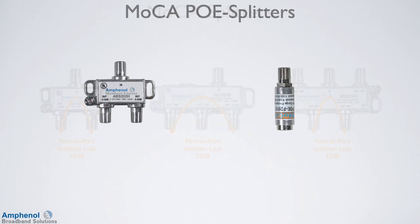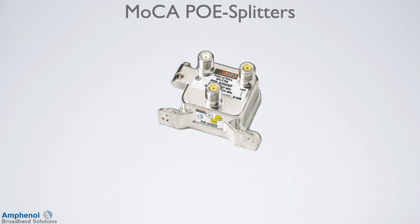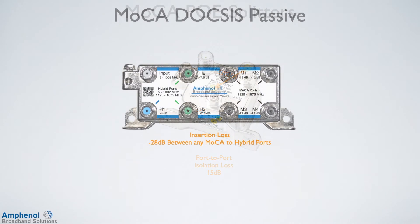There are also MOCA devices that have the MOCA point-of-entry filter built into them, such as splitters and ground blocks. For a two-way splitter with the built-in point-of-entry filter, the port-to-port isolation is 15 dB. The MOCA DOCSIS Passive is designed for MOCA and DOCSIS devices — the maximum MOCA loss between any two ports that communicate at MOCA frequencies is 28 dB. To learn more about this device, check out our website — I'll provide the link at the end of the training.